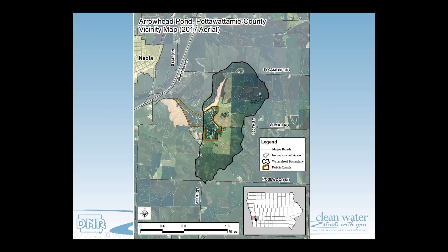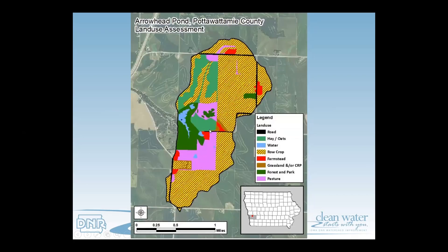The legend will show the watershed boundary as a dark outline, and a gold line indicates public land — the park surrounding Arrowhead Pond. On a closer land-use map, you'll see different colors: the yellow and brown crosshatch indicates row crop land, the purple color indicates pasture, and so on. The legend is very useful in determining what each color represents — it's colorful but also very informative.